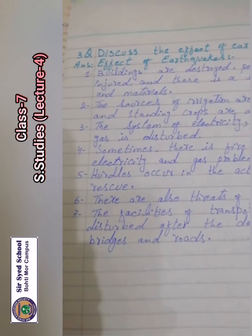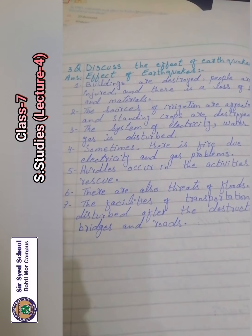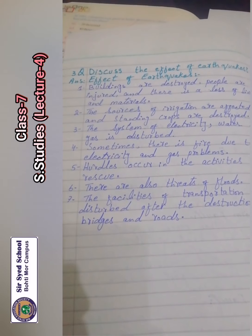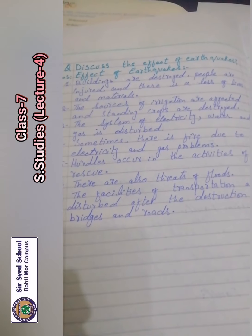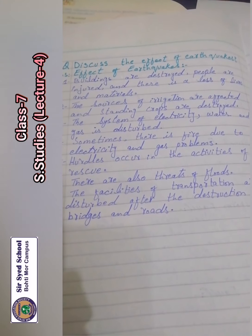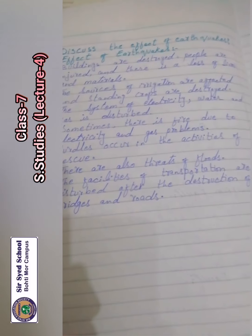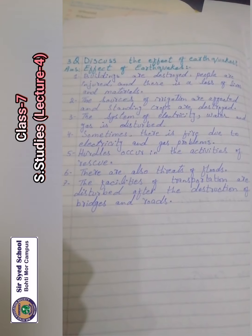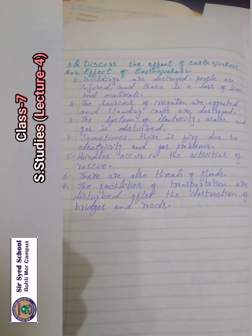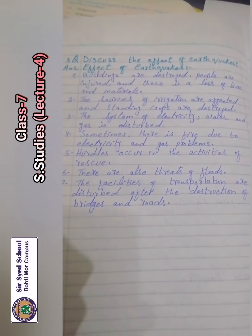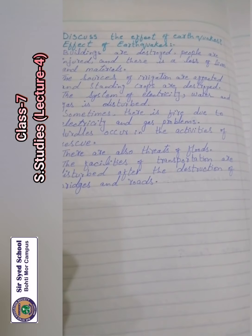Question number three: The Effects of Earthquake. Effects of earthquake — write it as a heading. Buildings are destroyed, people are injured, and there is a loss of lives and materials. Many buildings are destroyed, people get hurt, and there is a serious loss of lives and property.